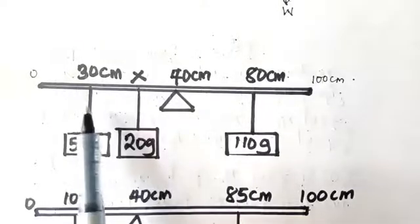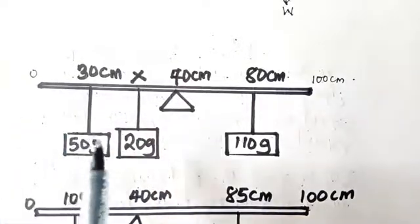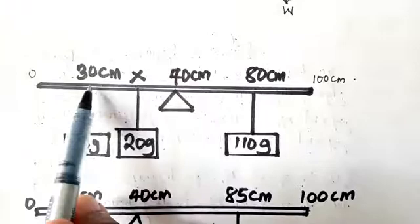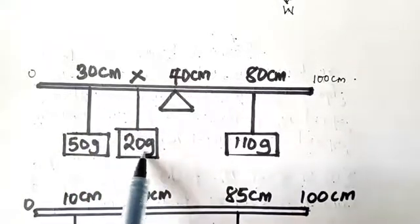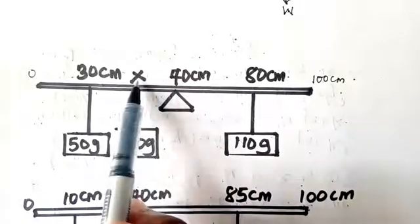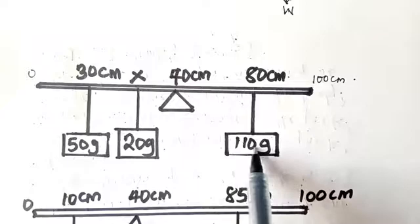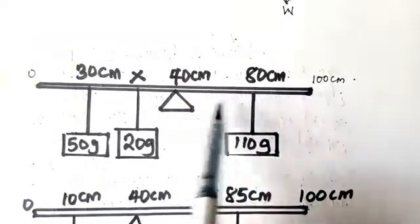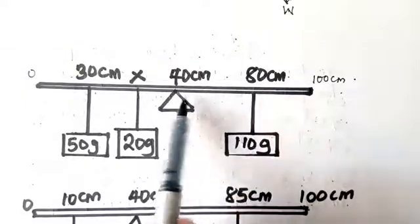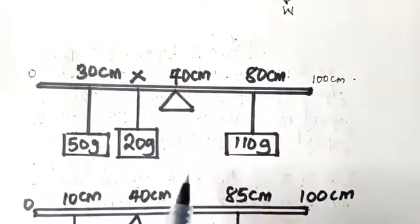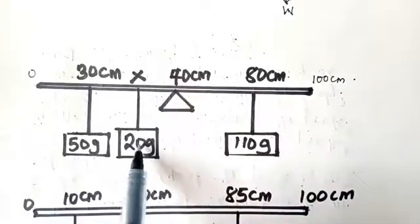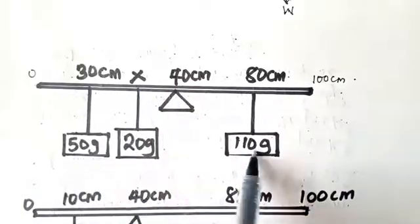Another case is where a meter rule — which is normally 100 centimeters — has a weight of 50 grams hung at the 30 cm mark. Then another weight of 20 grams was hung at a particular point, which they did not tell us. Then 110 grams was hung at the 80 centimeter mark. When all these weights are hung, the meter rule balances at 40 centimeter mark. The question asks: find the value of X, where 20 grams was hung, in order for these weights to balance.